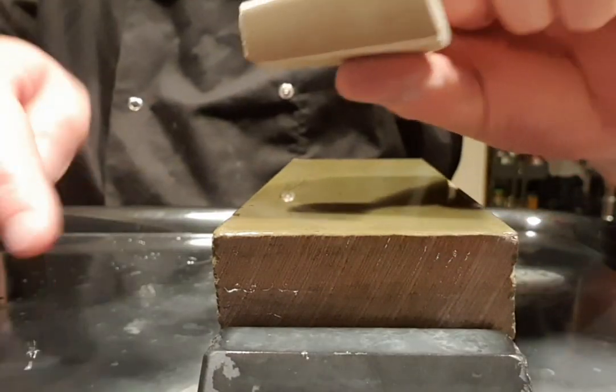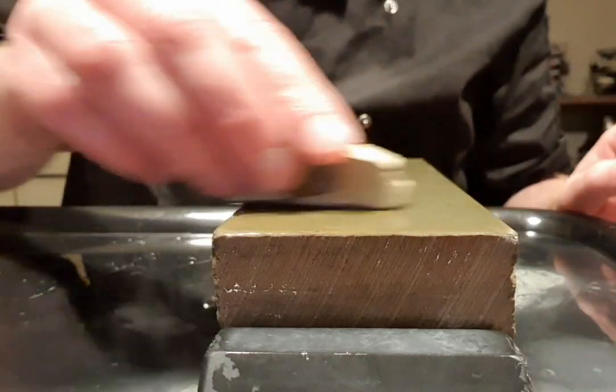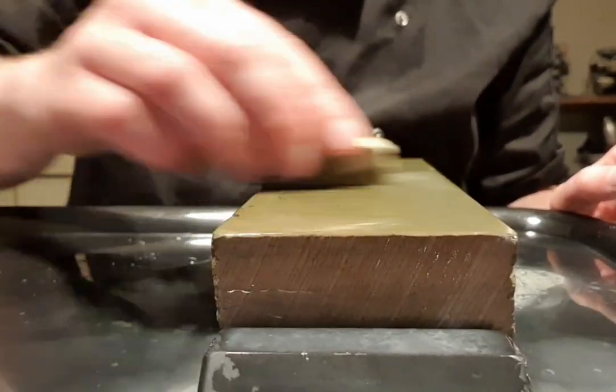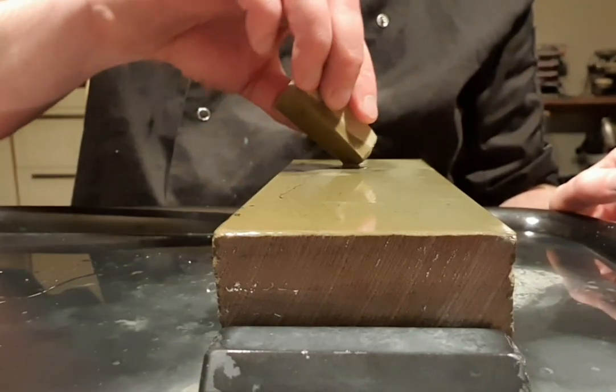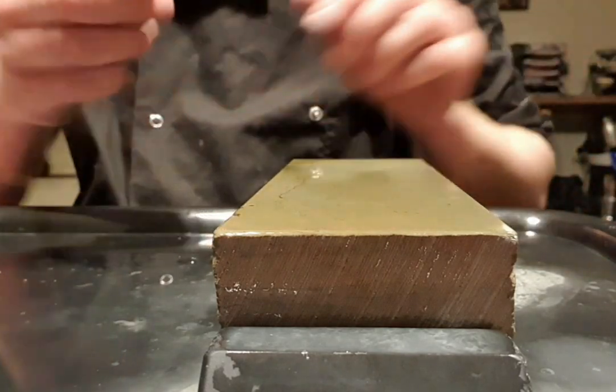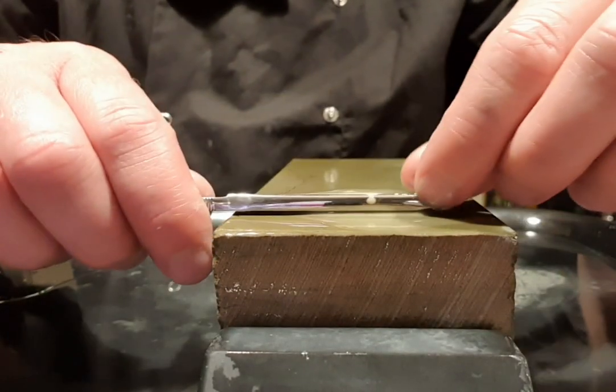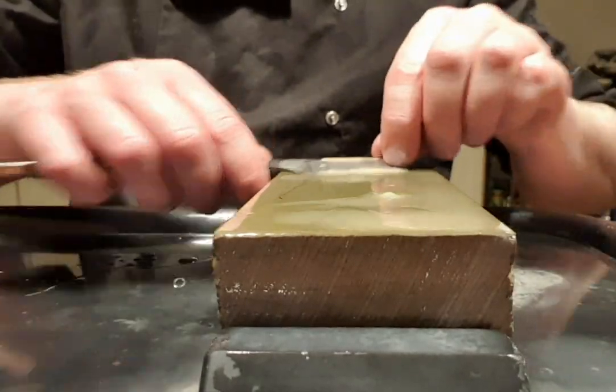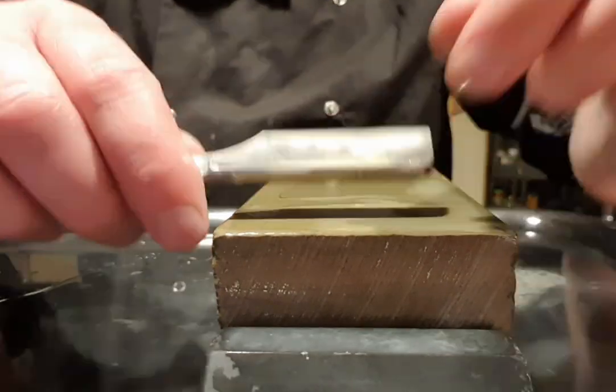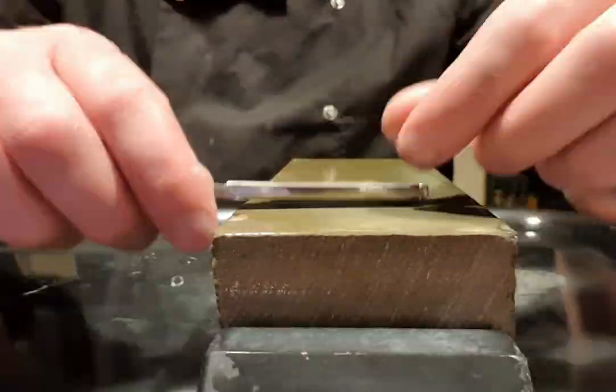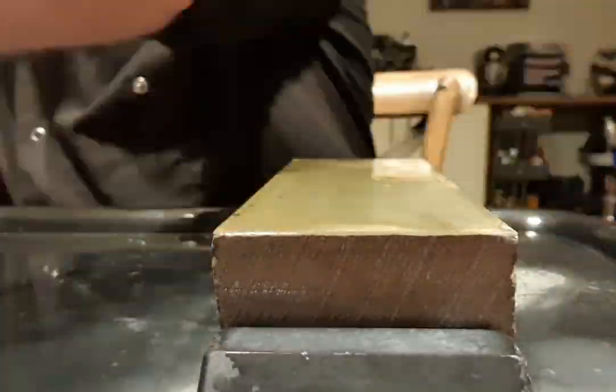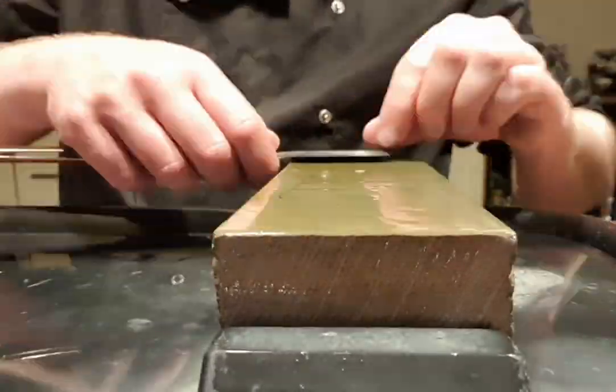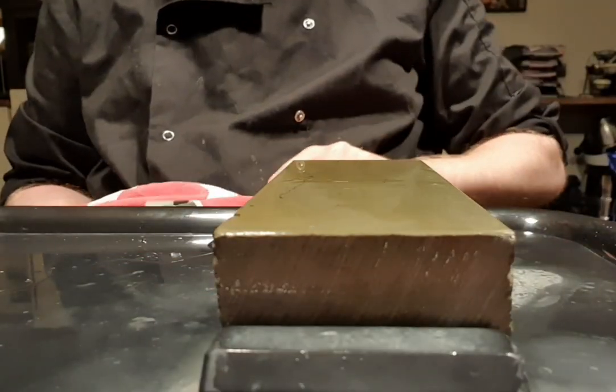We're gonna clean the stone and use our last slurry stone now, which is a Tomo nagwa. The Tomo nagwa would give us a grit at around 15k. This slurry will be brown compared to the Asano giving a white slurry. Same ratio of two to one. With this one we're gonna cut in the middle of the process the slurry with some water to make the slurry even thinner and have a higher grit.